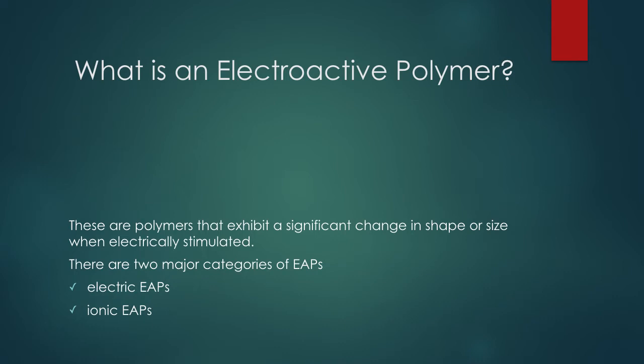So, what is an electroactive polymer? Well, these are polymers that exhibit a significant change in shape or size when electrically stimulated. There are two major types of EAPs: electric and ionic.